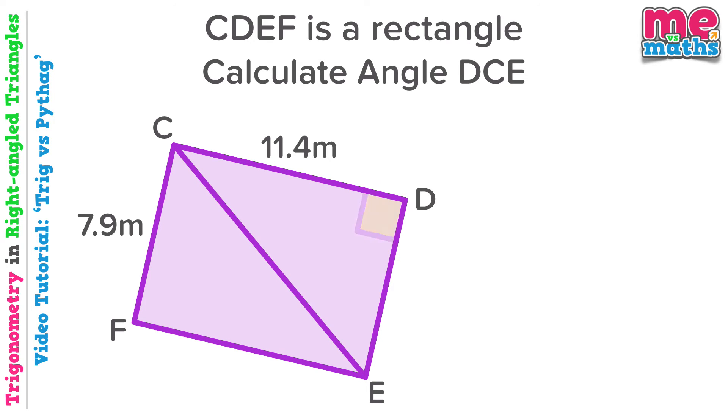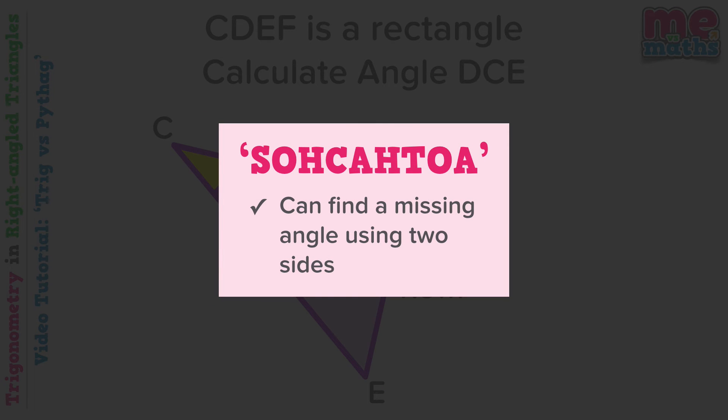We've now created a right angle triangle, or two actually, and we can mark on the angle that we are being asked to find. I'm going to focus on this triangle now as I don't actually need the rest of that shape. We're being asked to find a missing angle using two sides, so it's time for some trig again.